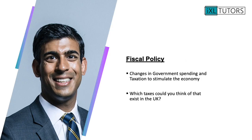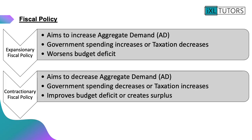Now we're going to move on to fiscal policy. Fiscal policy looks at changes in government spending and taxation to stimulate the economy. Which taxes could you think of that exist in the UK? Pause this video and brainstorm any taxes you think exist. In the UK, we have two different types of fiscal policy: we have expansionary fiscal policy and we have contractionary fiscal policy.